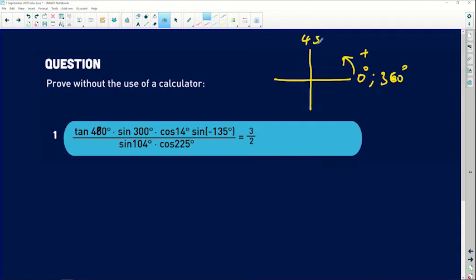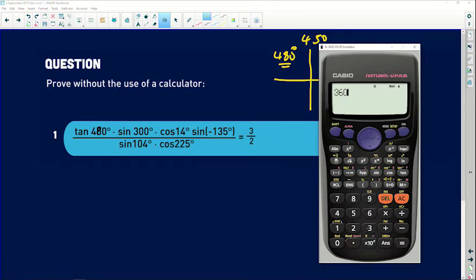So 480 degrees is going to lie in this quadrant, right? It's actually 60 degrees additional to 450 degrees - very important for us to keep that in mind. It's 480. So if I go there and I say 360 plus 90, we get 450. If I add 30 on that, you end up with 480 degrees, right?